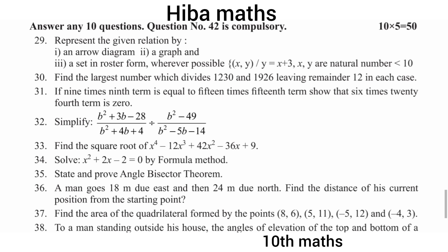Next question: find the largest number which divides 1230 and 1926, leaving a remainder of 12 in each case.